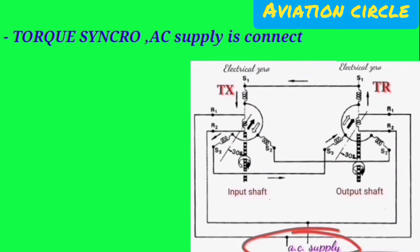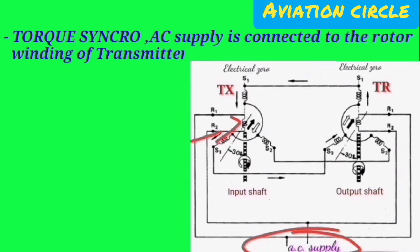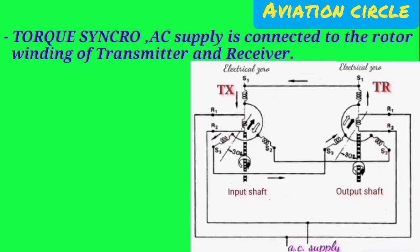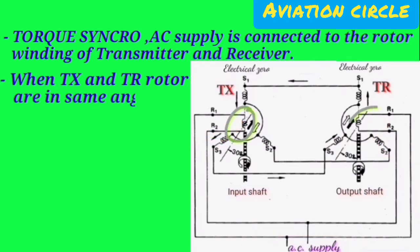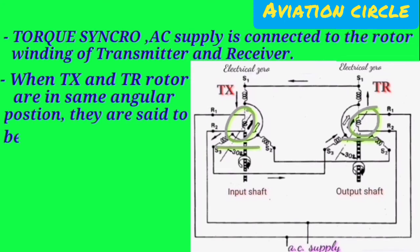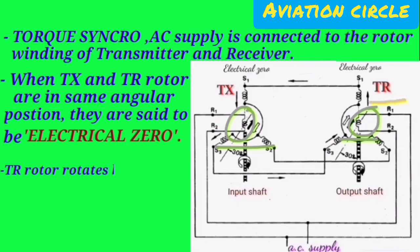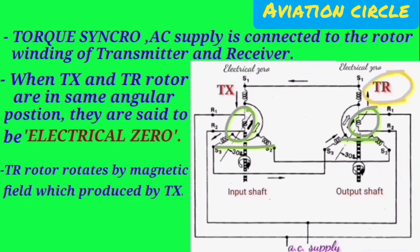In torque synchro, AC supply is connected to the rotor winding of both the transmitter and receiver. When the TX and TR rotors are in the same angular position, they are said to be at electrical zero. The TR rotor rotates by the magnetic field produced by TX.